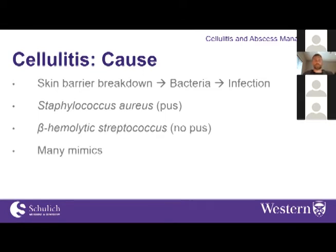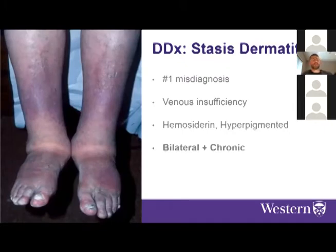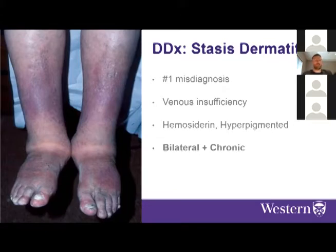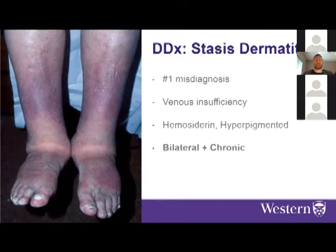There are many mimics — both infectious and inflammatory — to be aware of. The number one cause of cellulitis misdiagnosis is stasis dermatitis, stemming from venous insufficiency or cardiac anemia. Fluid leaks into the interstitium causing skin irritation, redness, and inflammation. Acutely it appears more cellulitic; chronically it presents with hemosiderin deposition, hyperpigmentation, and thickened skin. The key diagnostic clue is that it's bilateral and chronic.